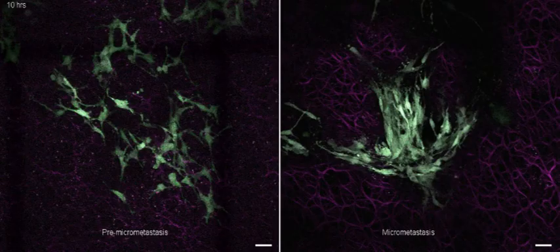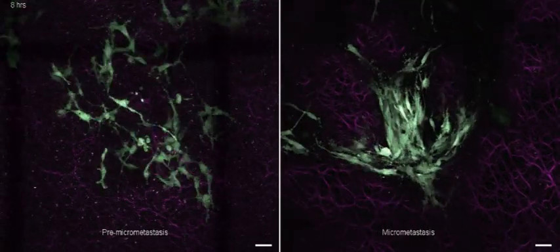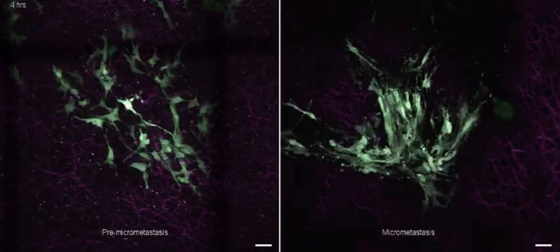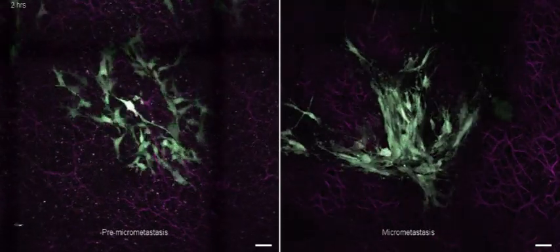In the left-hand side, you see that the cells within the pre-micrometastasis are very motile. They move around a lot. In the right-hand side, the cells are just sitting there and are not motile.